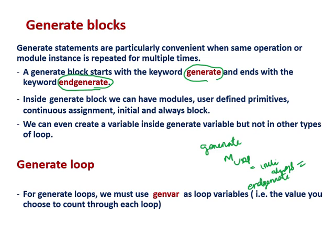So inside a generate block we can have: modules, user-defined primitives, continuous assignments, initial, and always. We can even create a variable inside a generate block, which is not possible in other loop types. In for loops, while loops, and repeat loops, you cannot declare a variable inside the loop body — but inside generate blocks you can create your own variables.